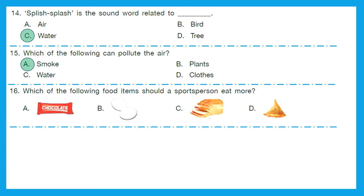Question 16: Which of the following food items should a sports person eat more? Out of chocolate, eggs, bread and samosa, which one is the healthiest? Option B — egg. Most people should eat eggs because they have protein. If someone is vegetarian, they can have a different source of protein. Sports persons definitely need strong muscles, and protein makes our muscles strong. Option B is the right answer.